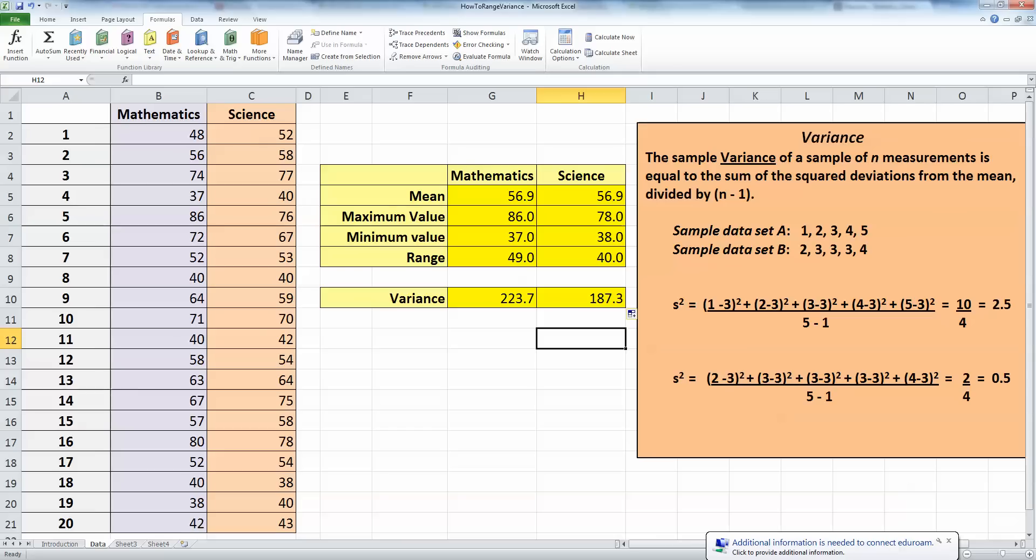So these figures are most useful when you're comparing them with each other, and these results here tell me that in addition to the range where the range of the maths test is much wider, the variance test is telling me that the maths scores are much more varied than the science scores, as you can see with these two values here.